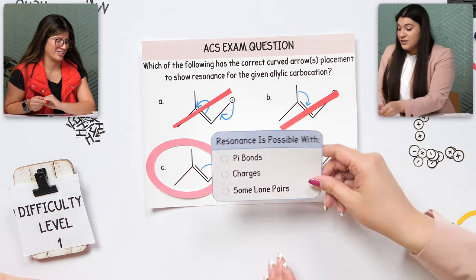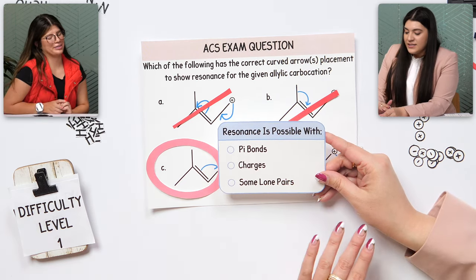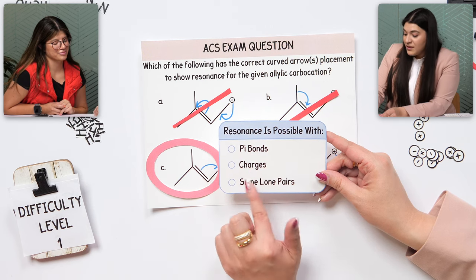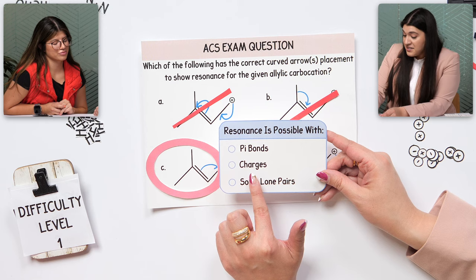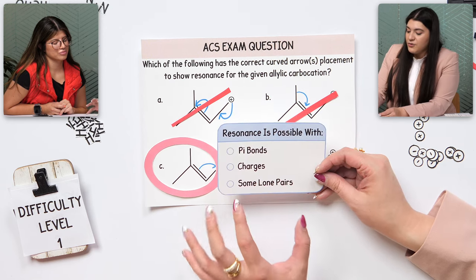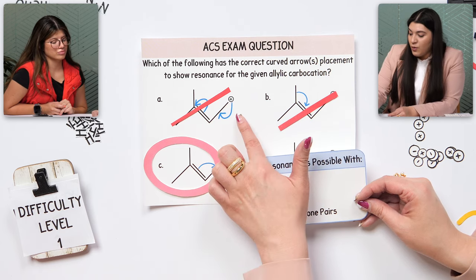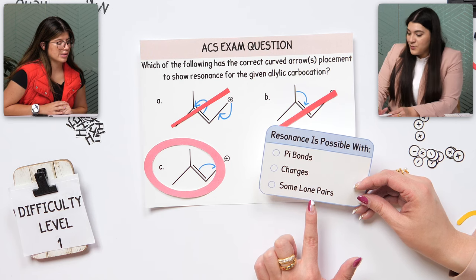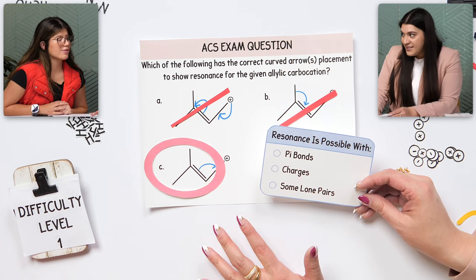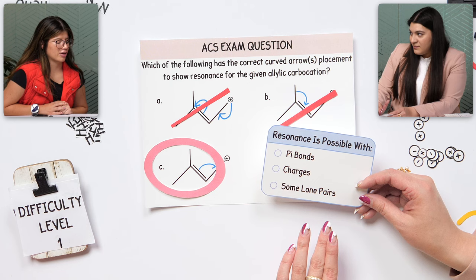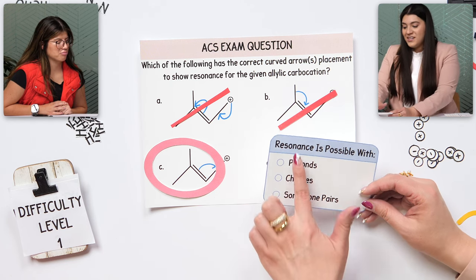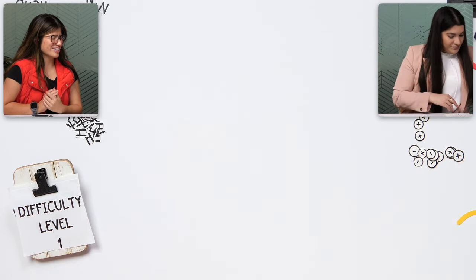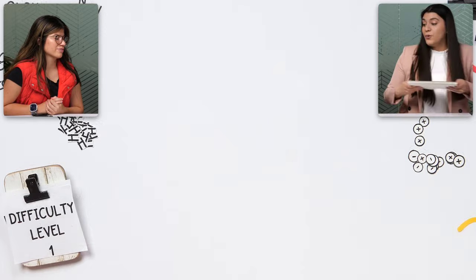So going back to what is possible with resonance: the main things we look at are pi bonds — double or triple bonds — and charges, both positive and negative. That's kind of where resonance will occur. We do not want to move from a positive charge — it's not possible. Some lone pairs will not be involved in resonance while others will, but we'll cover that. That's the main rule of thumb.